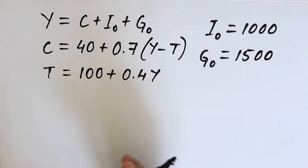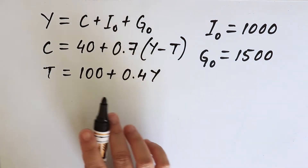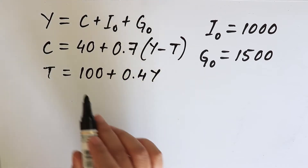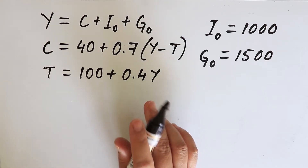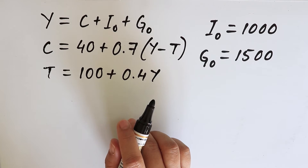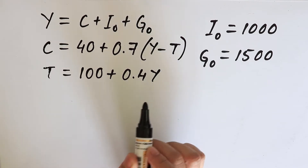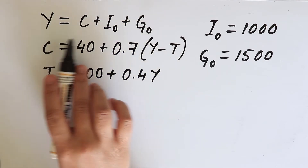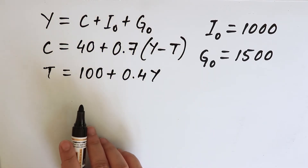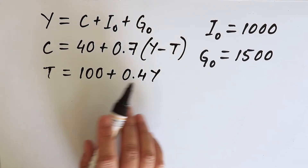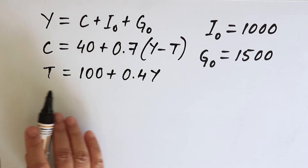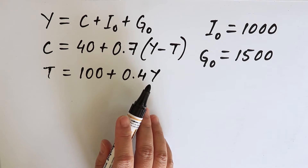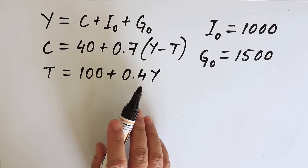This problem may be solved by using the simple substitution and elimination method. In this video we will try to solve this problem by using the matrix method. We will rewrite the equations such that all the variables are on the left hand side, the constants are on the right hand side, and the missing variables are given a coefficient of 0.